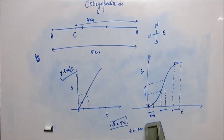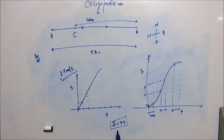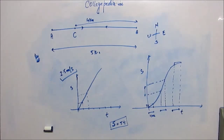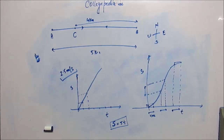In this lesson, let's start to find instantaneous speed. You have a relation between distance and time. Suppose we want to find out what was the distance travelled by this person in the first second of his journey.